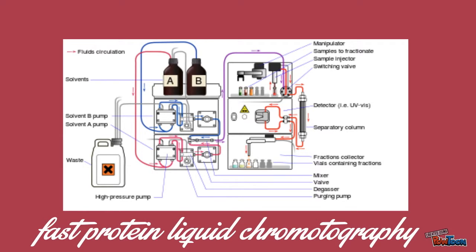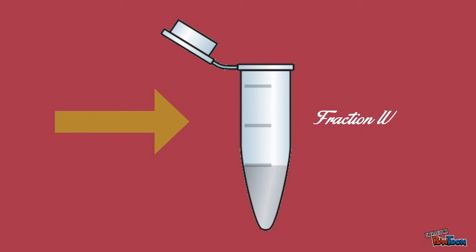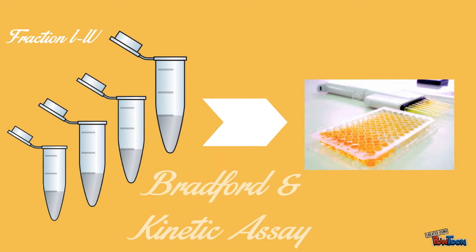Now we get to FPLC — that's fast protein liquid chromatography. We use this to further purify the alkaline phosphatase protein from other contaminants. We equilibrate the column with Buffer A, which contains no salt, then add the protein, which has an affinity for the column and will bind with the resin. Buffer B, which has sodium chloride, will be gradually added to elute the protein by replacing it on the resin with salt. The flow-through will be collected as fraction four. Now we can run Bradford and enzyme kinetics assays on the fractions.